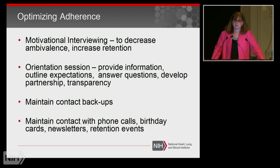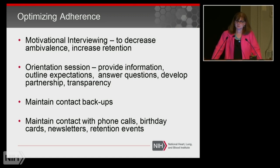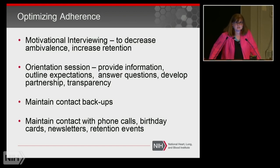Get contact backups — family members — from participants if you're doing a longitudinal study. People move and sometimes forget to tell you, so a backup is a good idea. Get this with participant consent on the consent form. If you can maintain contact with participants throughout a longitudinal trial — phone calls if that's part of your intervention — it's really nice to send birthday cards. It doesn't cost much and people appreciate it; it's part of the relationship you're building. Newsletters are also very effective — they take time, but they work.